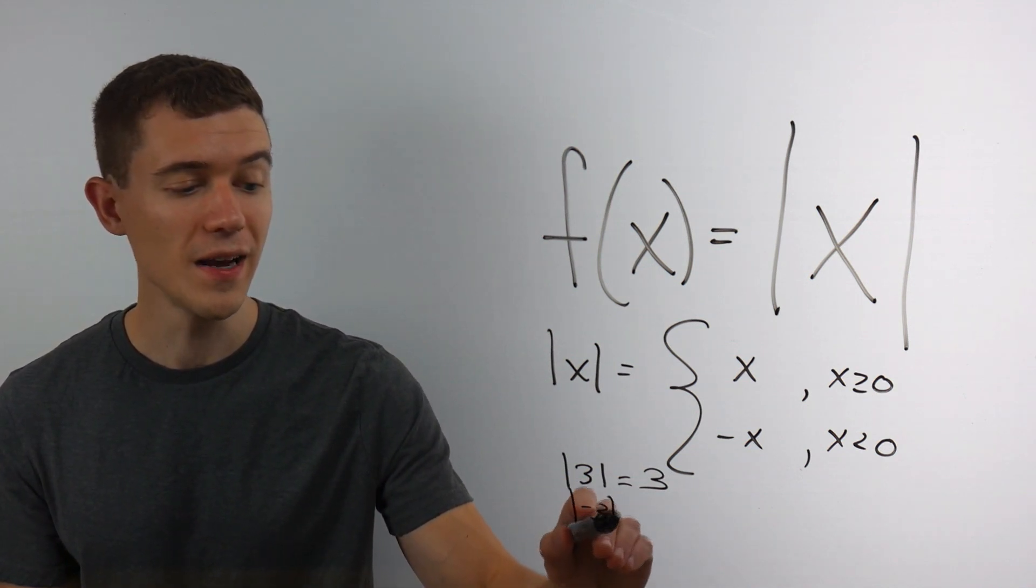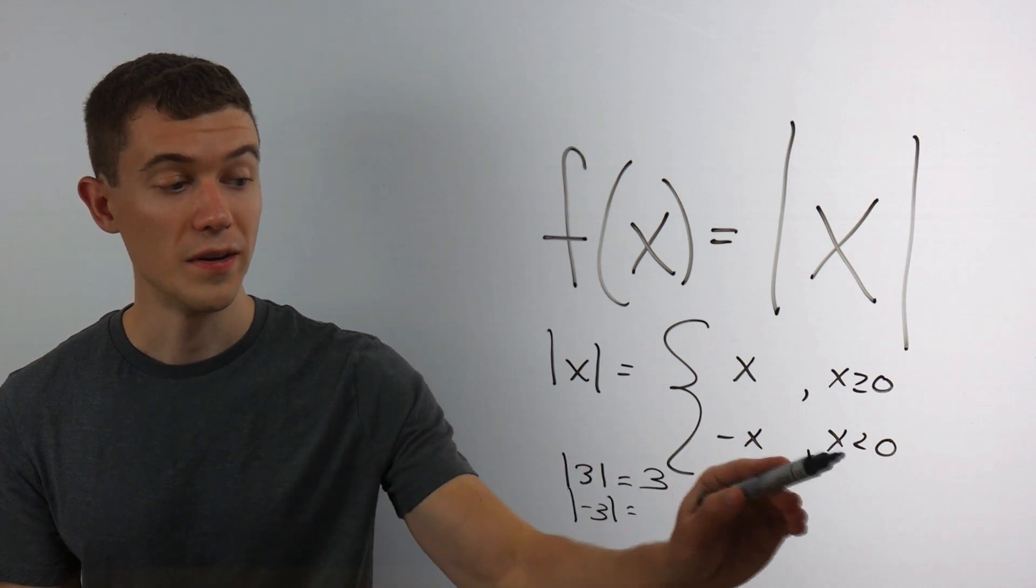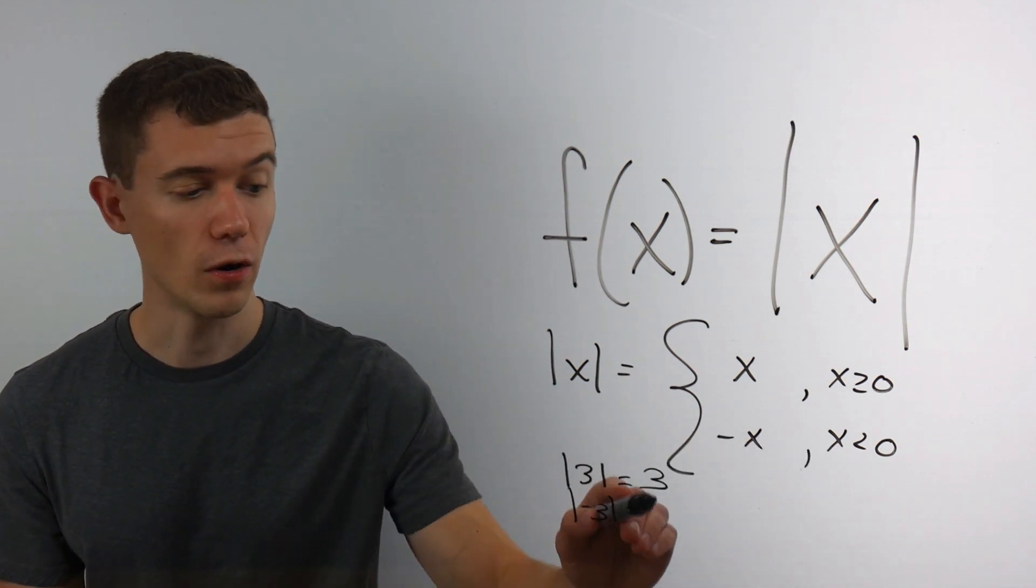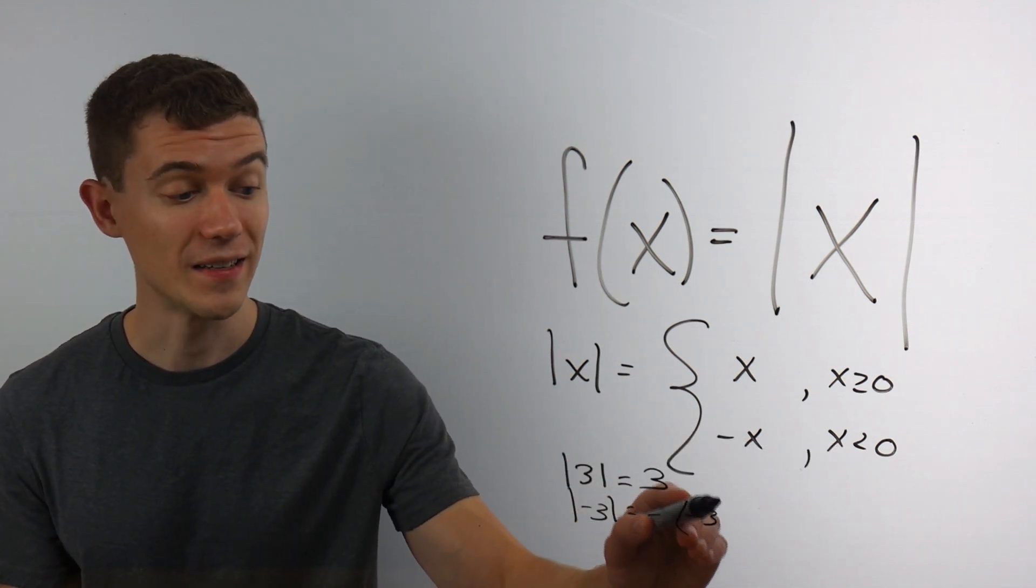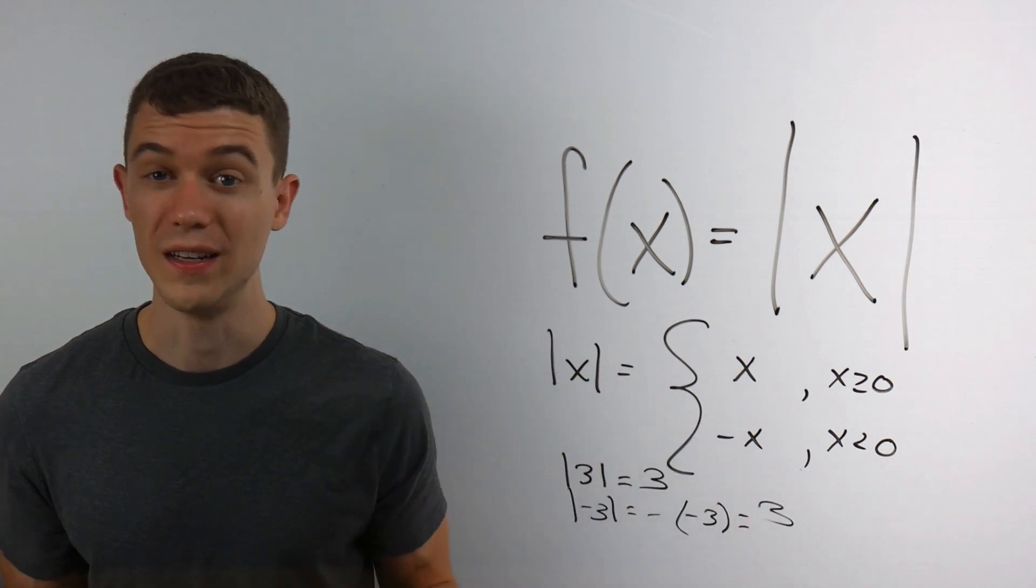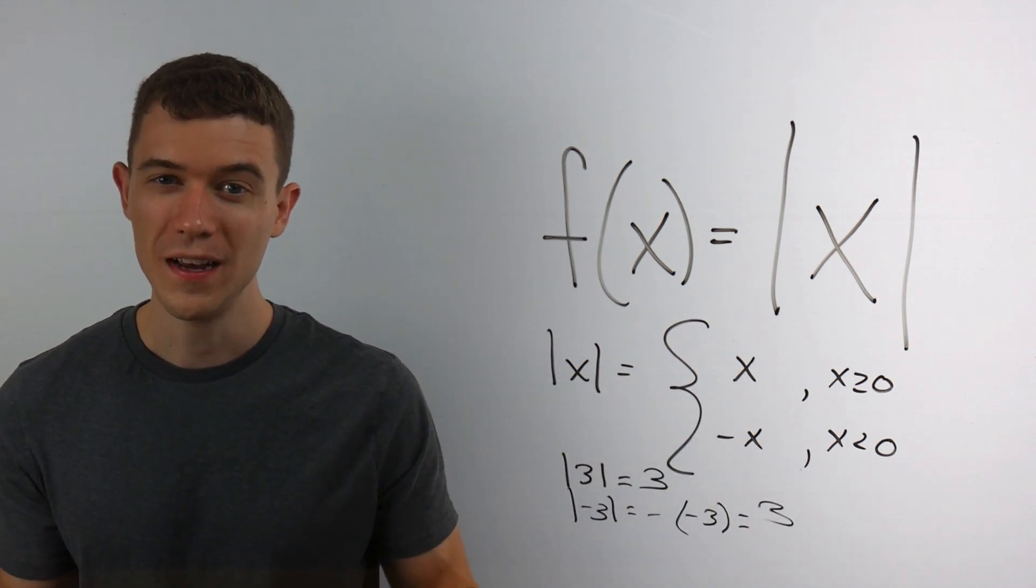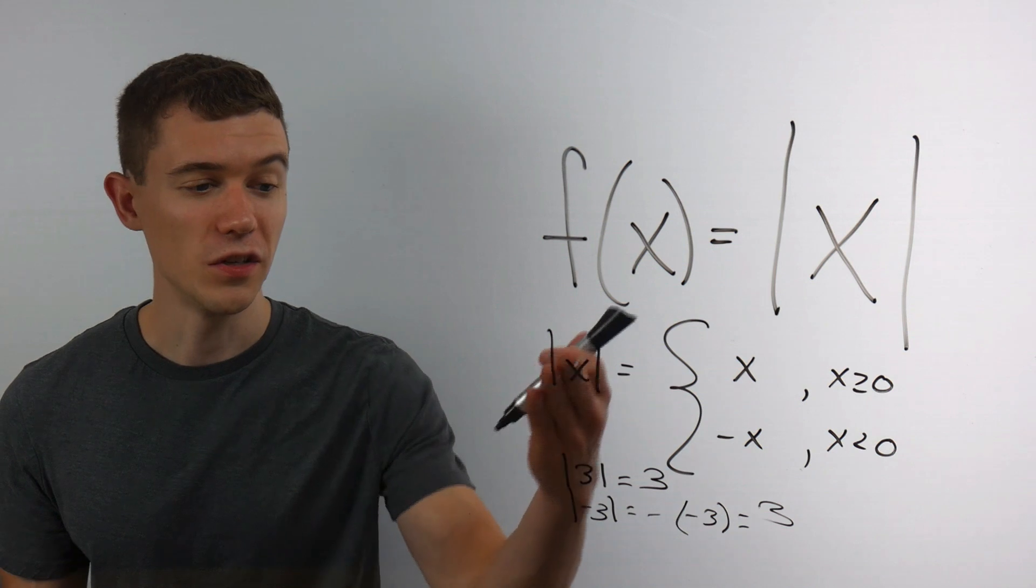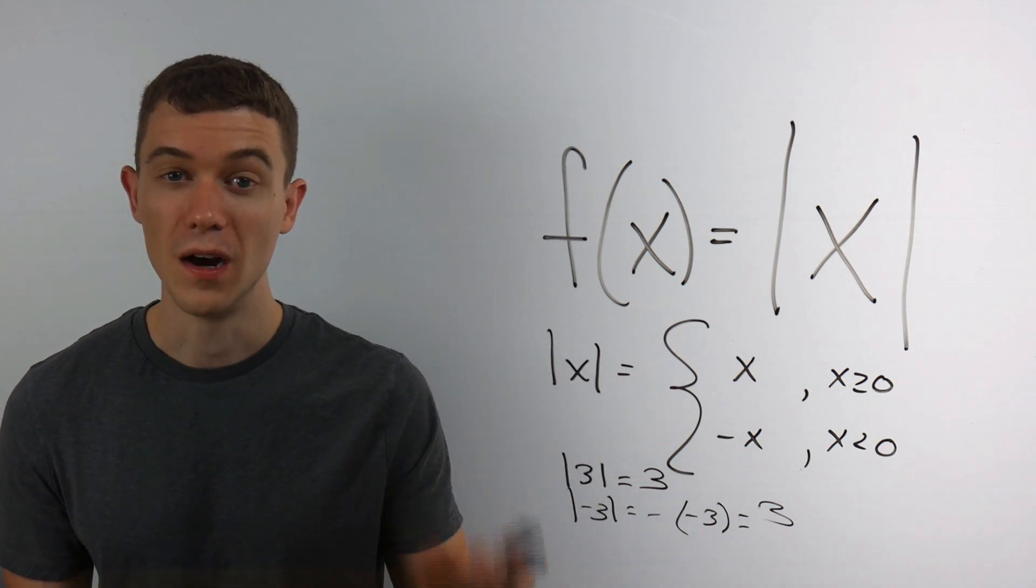But if I input negative 3, negative 3 is less than 0. So I negate this. And negative negative 3 is positive 3. So the absolute value essentially just takes off the negative of anything.